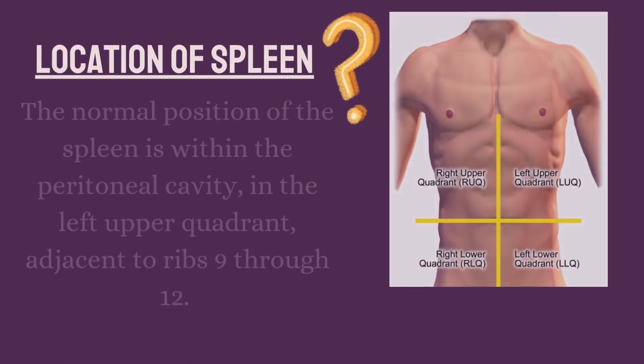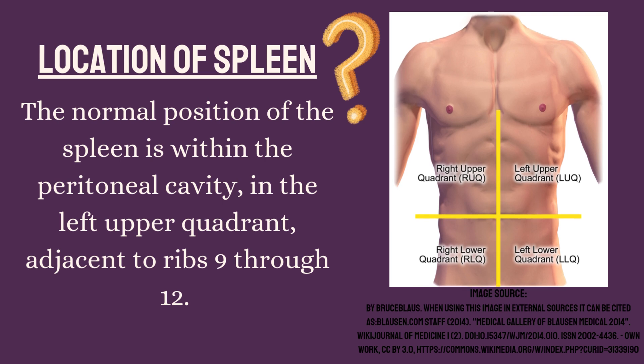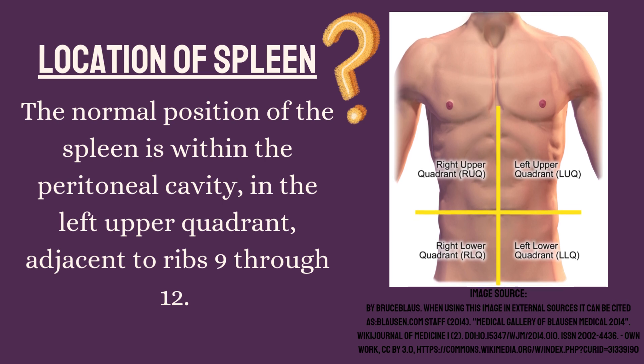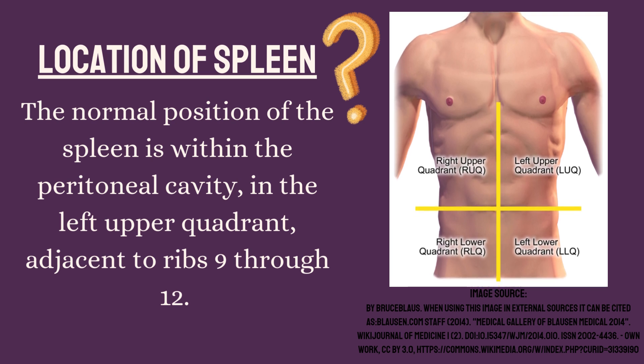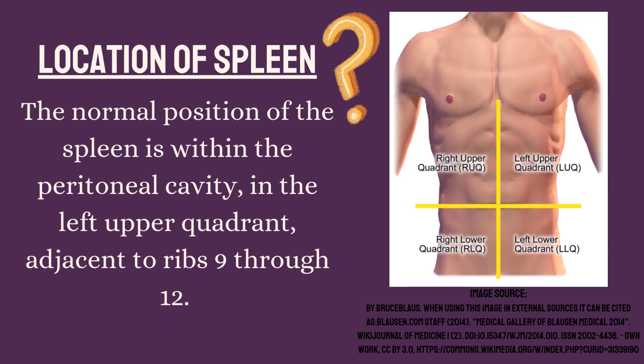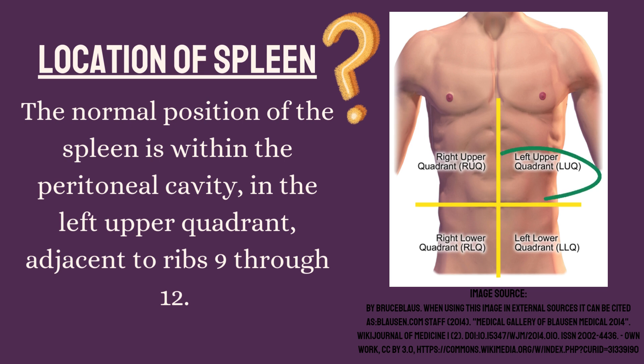What is the normal location of the spleen? The normal position of the spleen is within the peritoneal cavity, in the left upper quadrant, adjacent to ribs 9 through 12.